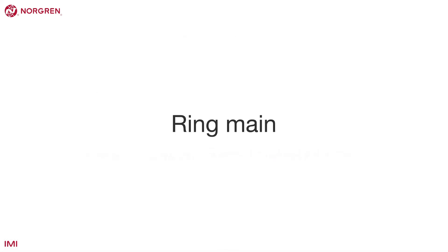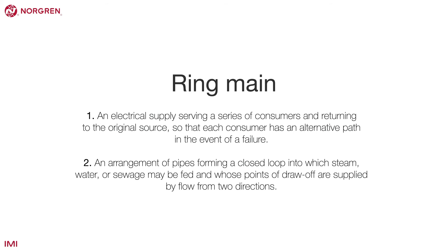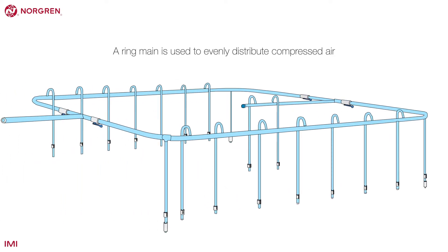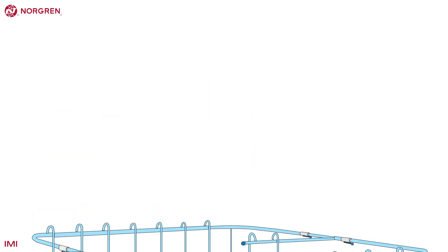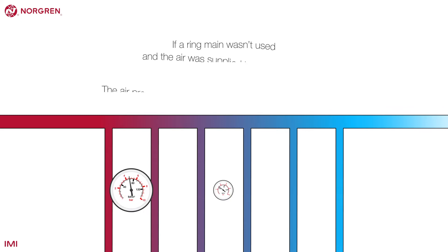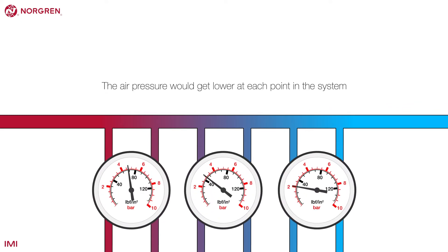You may have heard the term ring main before. It's sometimes associated with a circuit in your home. We use the same term with compressed air. A ring main is used to evenly distribute compressed air. If a ring main wasn't used and the air was supplied in one long line, the air pressure would get lower at each point in the system.